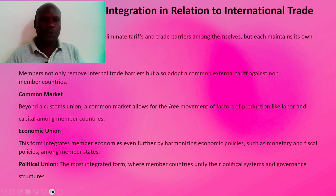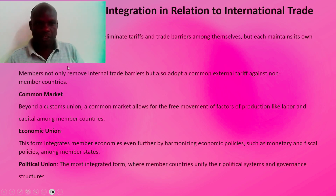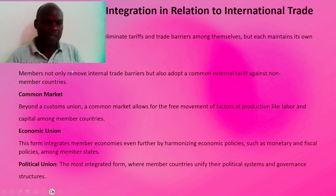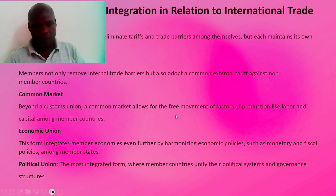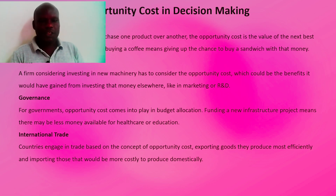The fifth form is a Political Union — the most integrated form — where member countries unify their political systems and governance structures, as observed with European countries in the European Union. In summary, the forms of economic integration in relation to international trade are: Free Trade Area, Customs Union, Common Market, Economic Union, and Political Union.